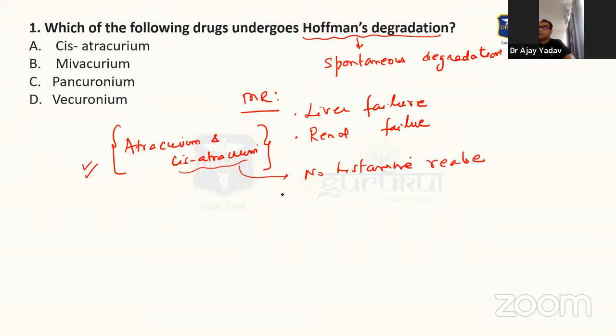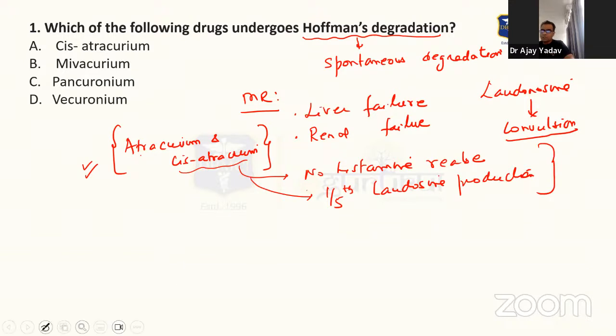Then one of the metabolic products of atracurium and cisatracurium, that is laudanosine, can cross blood-brain barrier to cause convulsions. Now the advantage of cisatracurium is that laudanosine production is one-fifth. So one-fifth laudanosine production. So no histamine release and one-fifth laudanosine production definitely will make cisatracurium to be always preferred over atracurium.